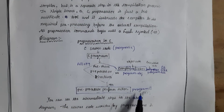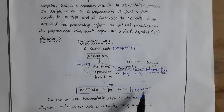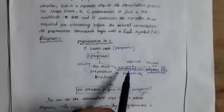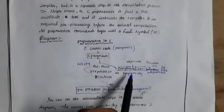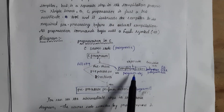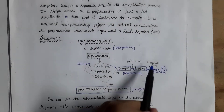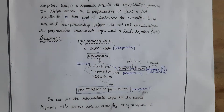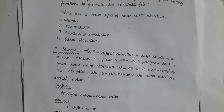After completion of the pre-processing task, the program.c file is converted into a program.i file, where program.i is an intermediate file. This program.i file is then converted to an object file by the compiler, and the object file is sent to the linker to create an executable file. After generating the executable file, we can execute our program.